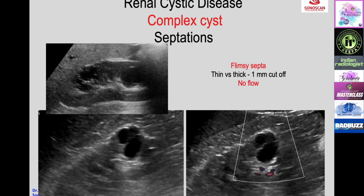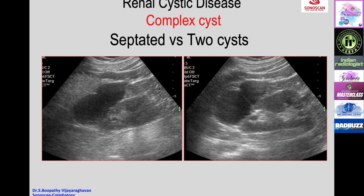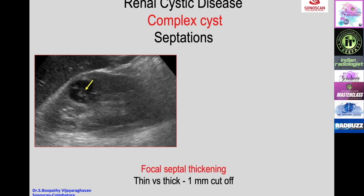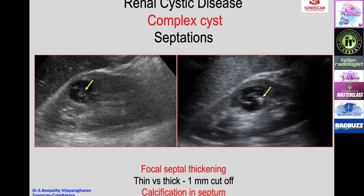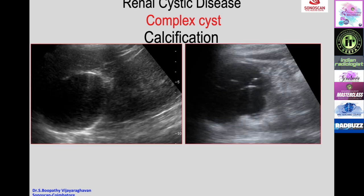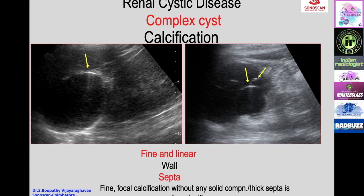Another feature of complex cysts is septations, typically flimsy septa. The cutoff between thin and thick septum is 1 mm, and there should be no flow in the septum in a simple septated cyst. One must also differentiate septated cysts from two adjacent cysts. Focal septal thickening greater than 1 mm and calcification in the septum are significant findings. Calcification can be fine and linear, thick and amorphous, or milk of calcium—milk of calcium indicates a benign cyst. Fine focal calcification without solid component or thick septum needs no further evaluation, whereas thick amorphous calcification may need excision and biopsy to rule out malignancy.